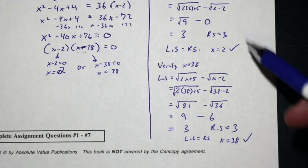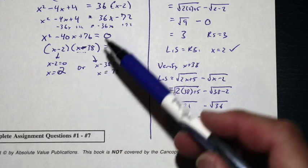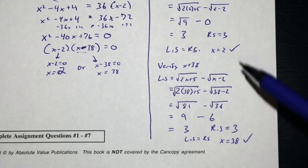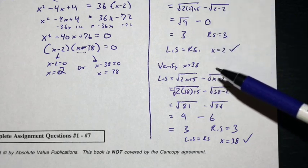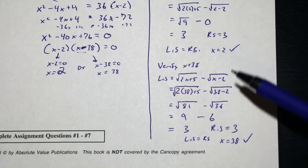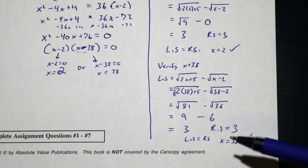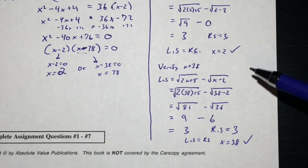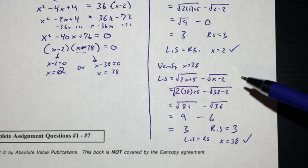Sometimes when we square both sides we may introduce an extraneous root. Other times, both answers may be valid solutions. We cannot tell whether we'll have one answer and one extraneous root, both answers correct, or none correct, until we do a verification. So it's always important to verify our answers to check if they work in the original equation. Okay, you're ready for your assignment now, and we will see you in class.